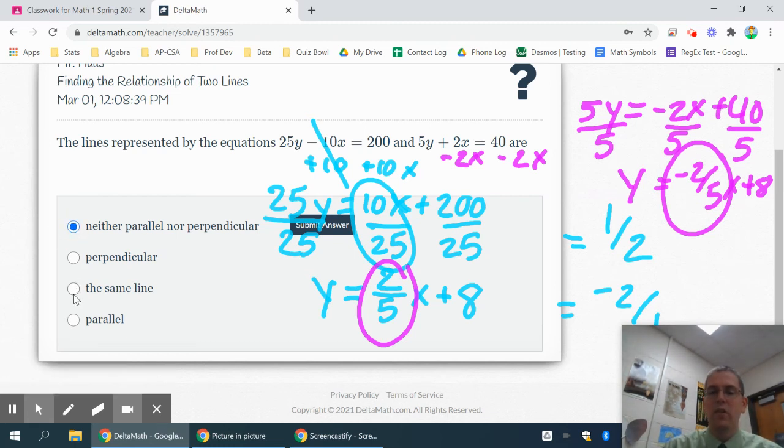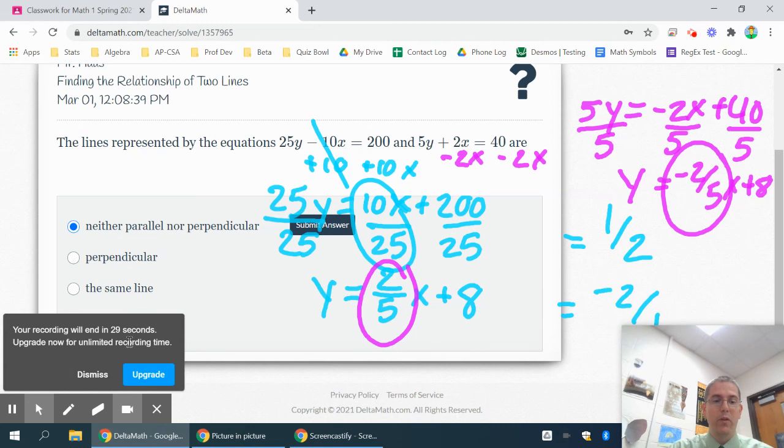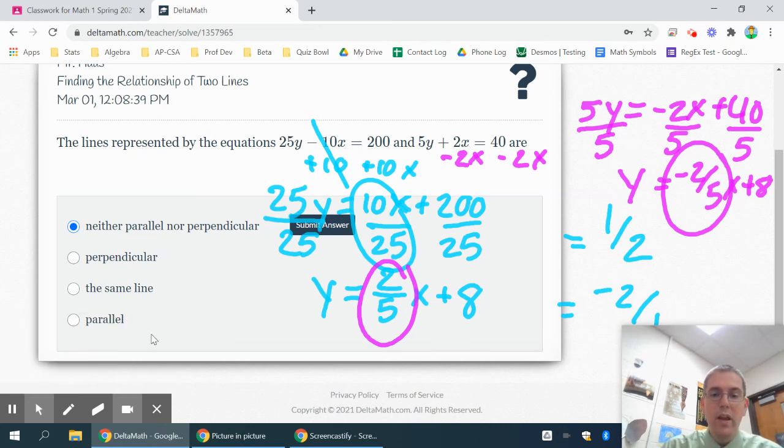Now this option for the same line will come up if you have the same slope and the same y-intercept. If that would have been exactly the same, if they both would have been a two-fifths x plus 8 and it was the exact same equation, that's when you would use the same line option. So that's how you handle this one, and remember parallel means exactly the same, perpendicular means change sign and flip fraction.